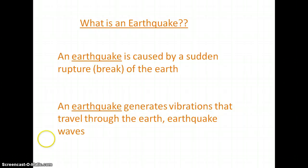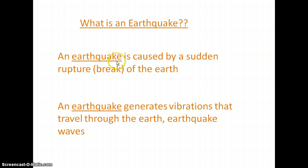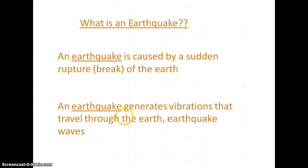An earthquake is caused by sudden rupture of the earth — that is a sudden rupture, which may be a fault, that is a break in the earth. An earthquake generates vibrations that travel through the earth called earthquake waves. In civil engineering it is called a seismic wave. These vibrations may be horizontal or vertical.